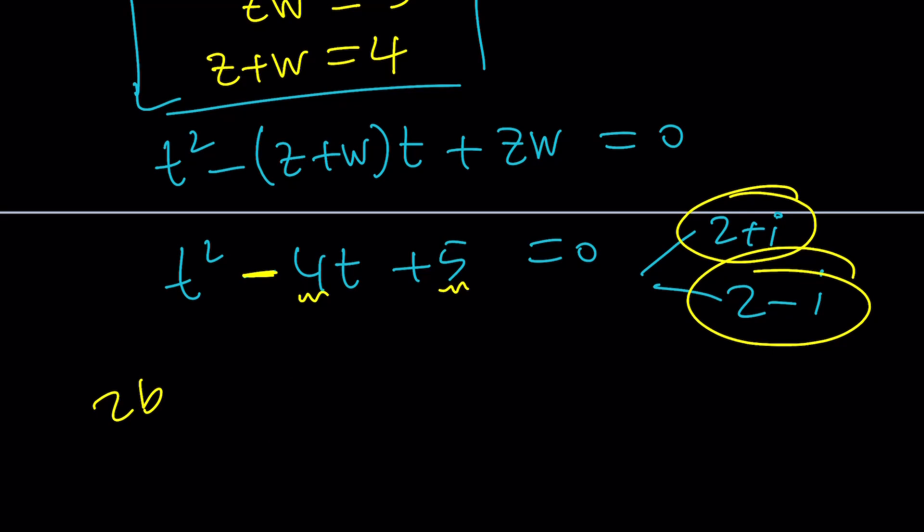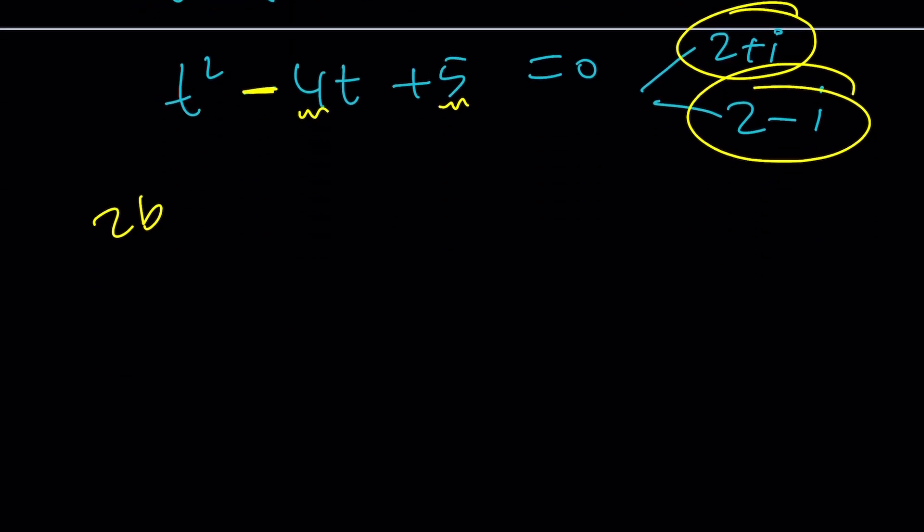I can go ahead and look at the sum of the roots. Now, what are the roots? I'm going to assume since these are complex roots, suppose z is equal to a plus bi and w is equal to a minus bi.